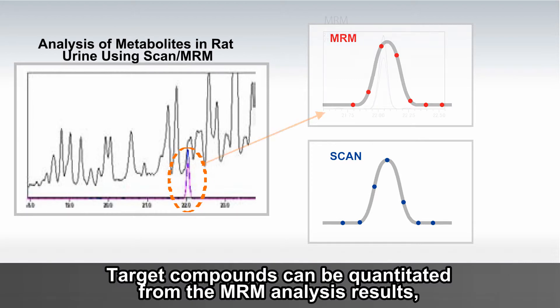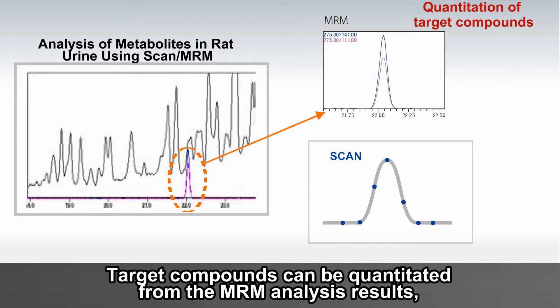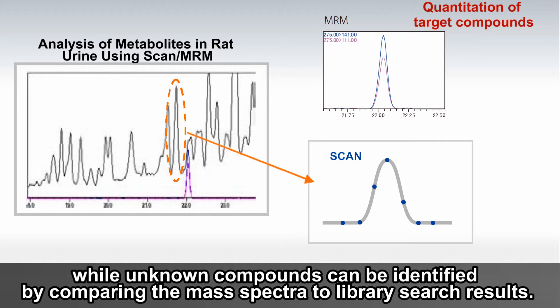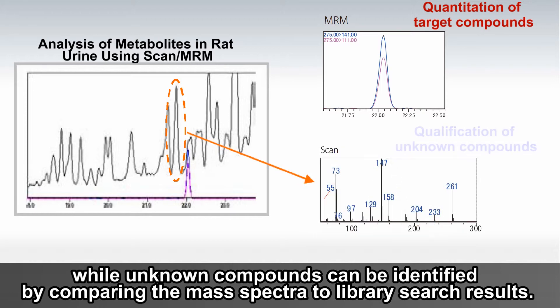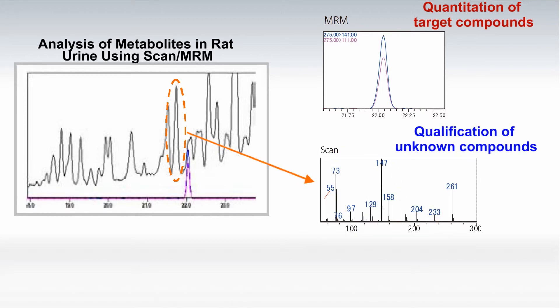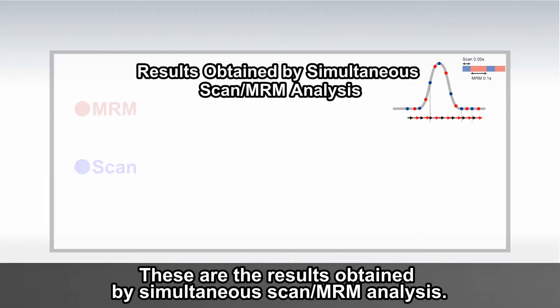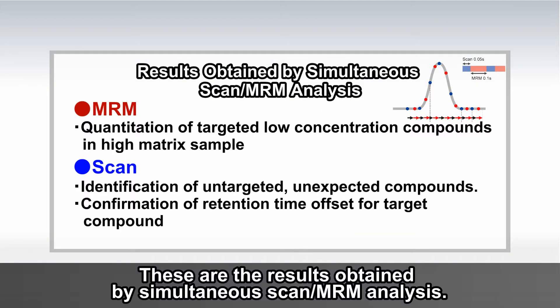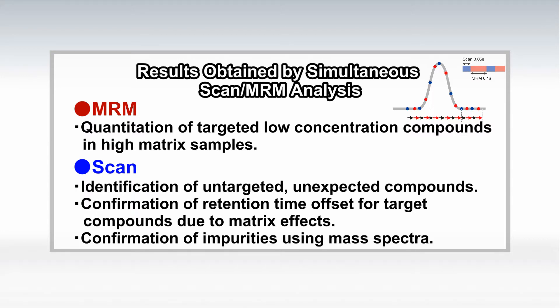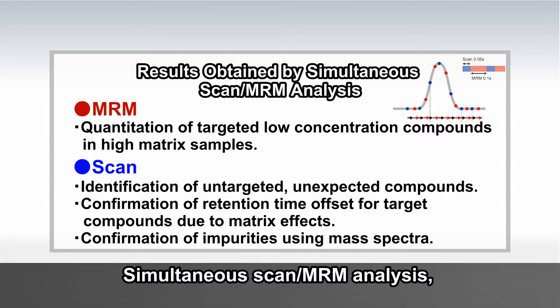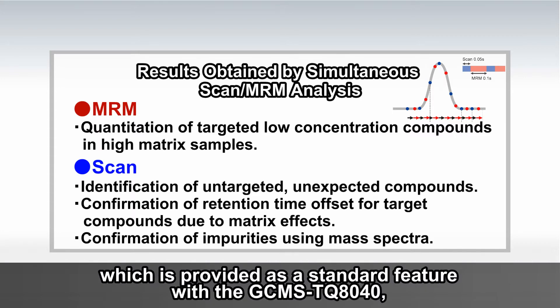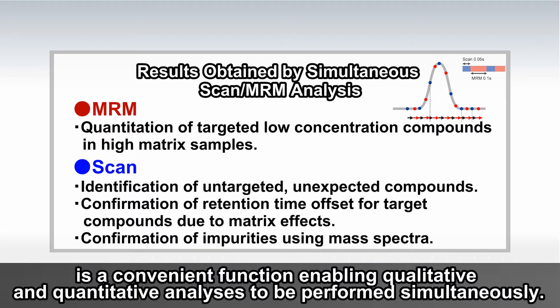Target compounds can be quantified from the MRM analysis results, while unknown compounds can be identified by comparing the mass spectra to library search results. These are the results obtained by simultaneous scan MRM analysis. Simultaneous scan MRM analysis, provided as a standard feature with the GCMS TQ8040, is a convenient function enabling qualitative and quantitative analyses to be performed simultaneously.